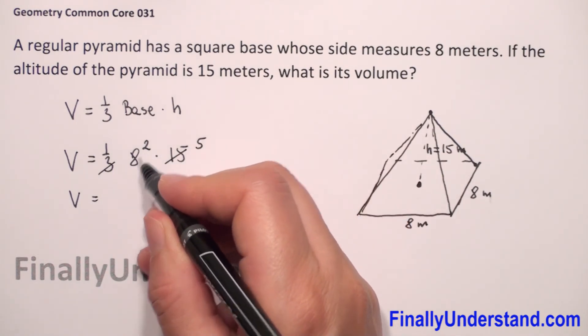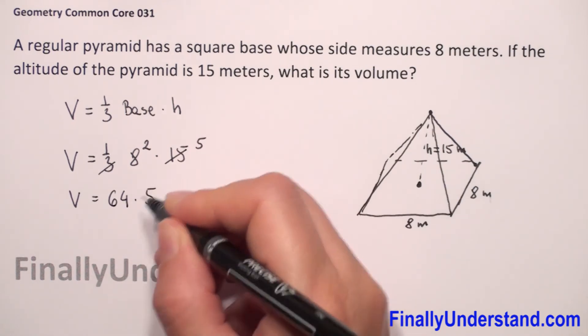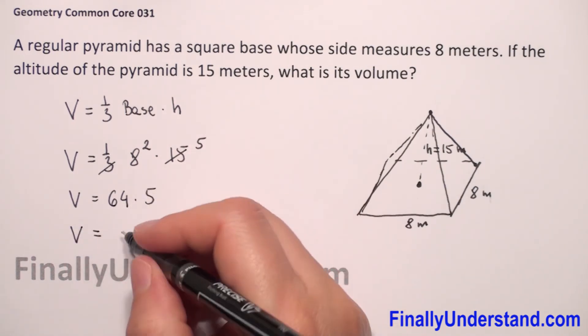So we have 8 to the second power is 64 times 5, so volume is 320.